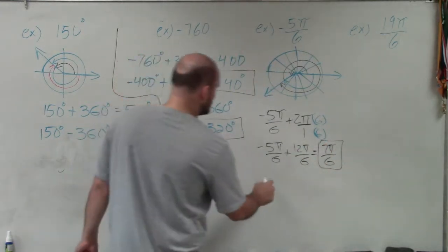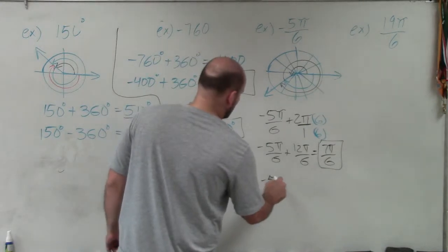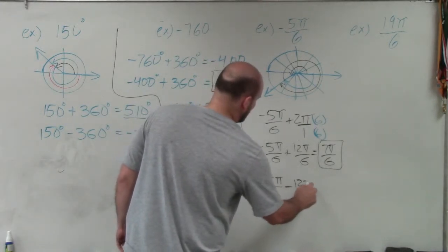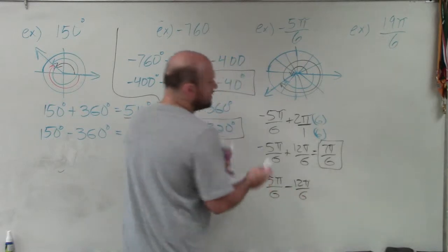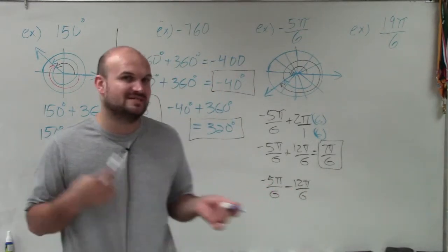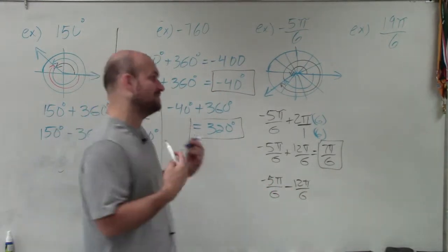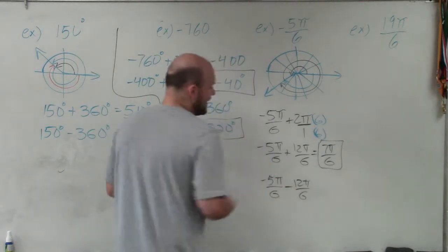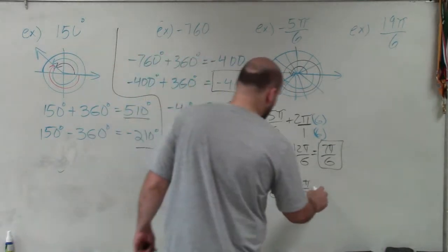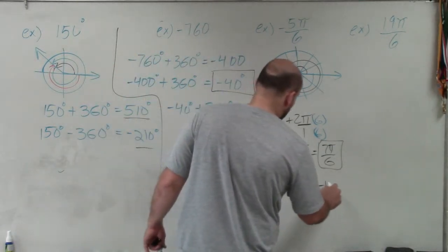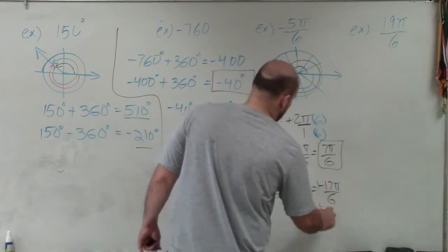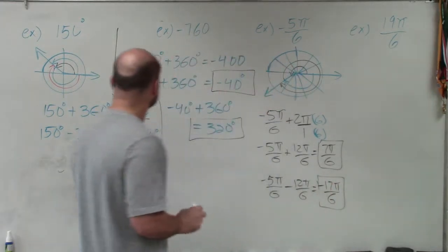Now I need to find the negative angle. I do negative 5 pi over 6 minus 12 pi over 6 — remember, subtracting 2 pi is the same as subtracting 12 pi over 6. So negative 5 pi minus 12 pi gives me negative 17 pi over 6, and that is my negative angle.